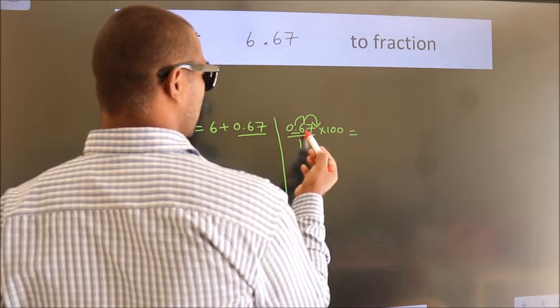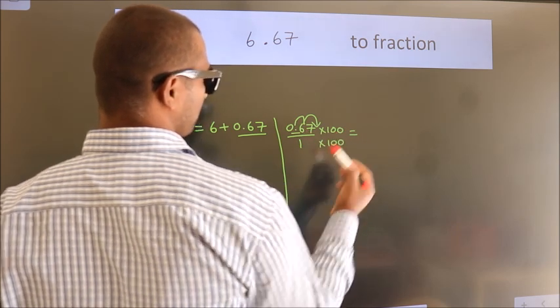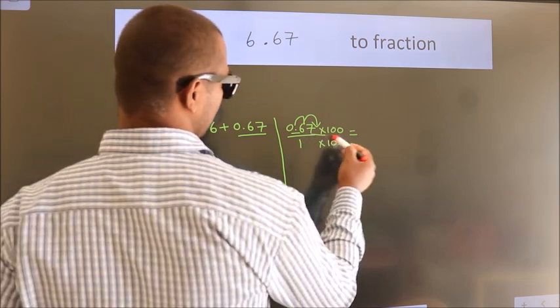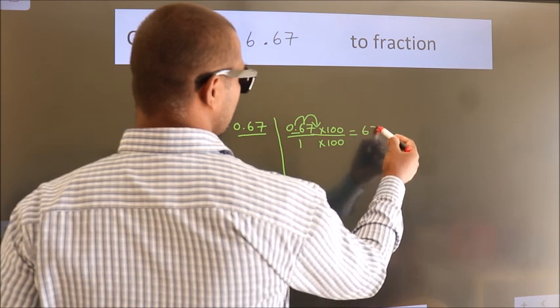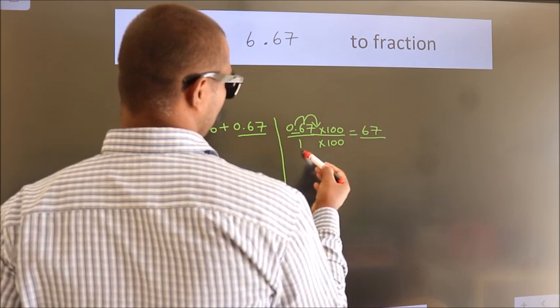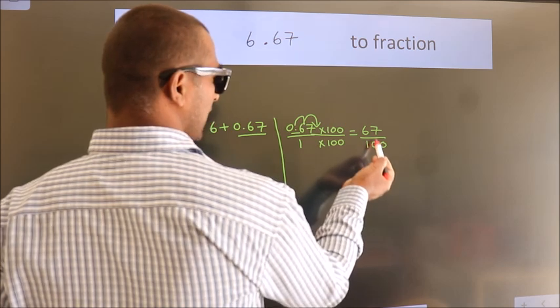Whatever we are multiplying in the numerator, in the denominator do the same. Next, 0.67 into 100 is 67. 1 into 100 is 100. This is the fraction we got.